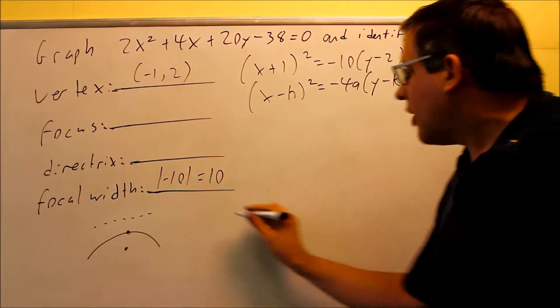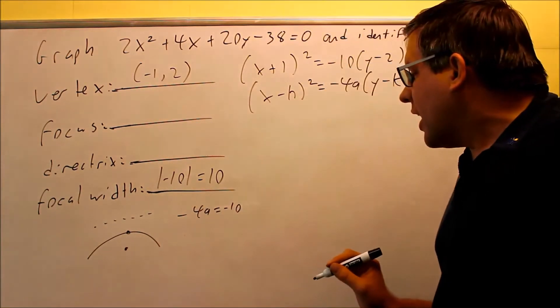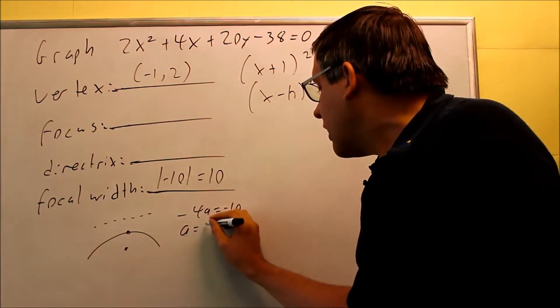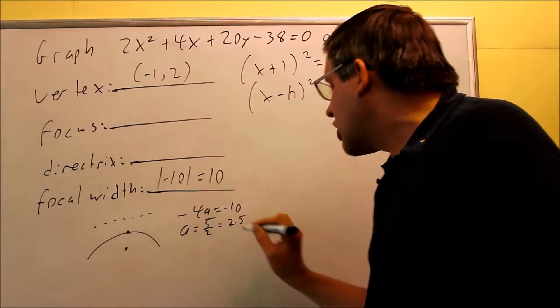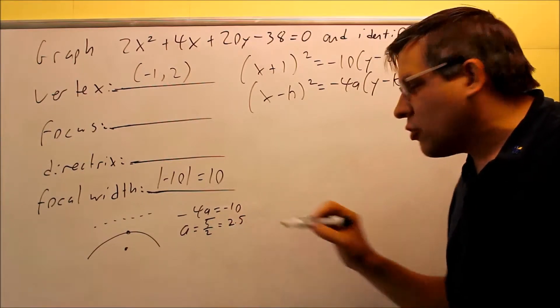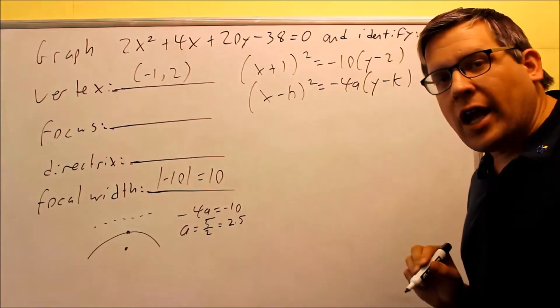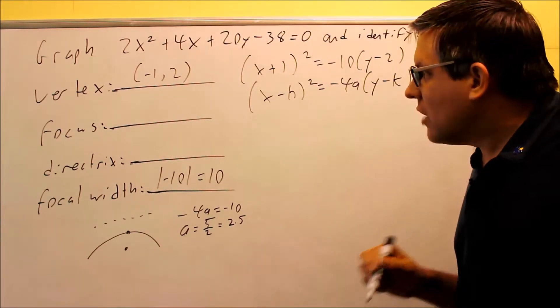We have to figure out what the a value is. Now in this case, we'll do negative 4a equals negative 10. Divide both sides by negative 4 and what you're going to get is you actually get a fraction or you can get a decimal depending on which one you want to use. You get positive 5 halves or 2.5. So not always are you going to get a whole number for a. This time we get a fraction. That's okay. We can still graph it the same way.